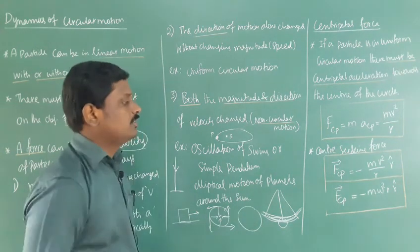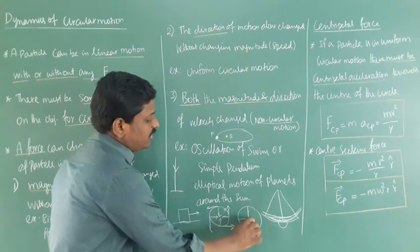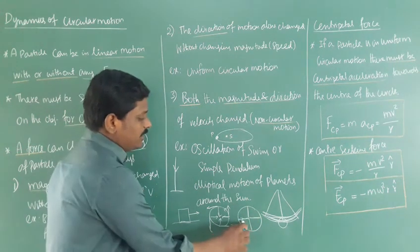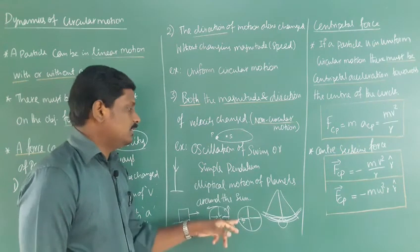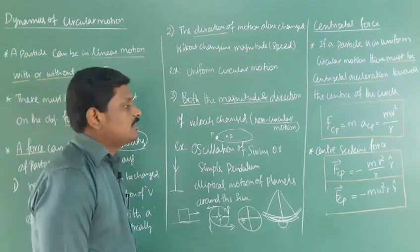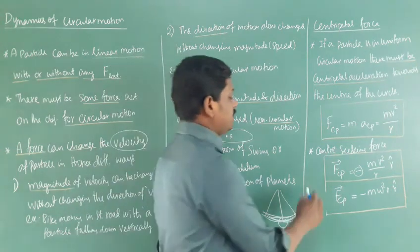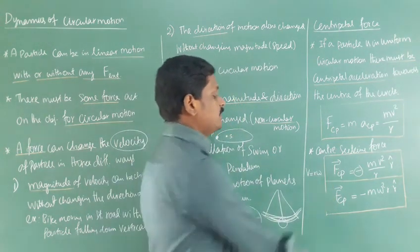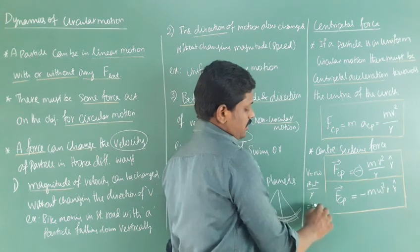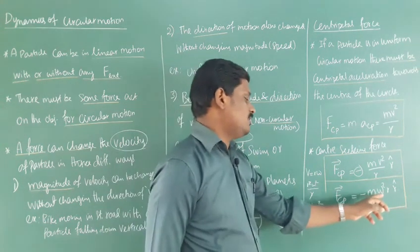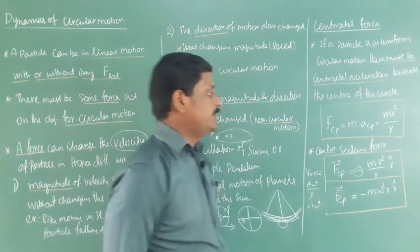The centripetal force in vector form is written as minus mv²/r times R-cap, where R is the radius vector of the circle. R-cap represents the direction of the vector. The minus sign indicates the force is acting towards the center. We also know the relation between linear velocity and angular velocity: v = rω. Substituting v² = r²ω², we get centripetal force equal to minus mω²r times R-cap. So these are the two forms of centripetal force.